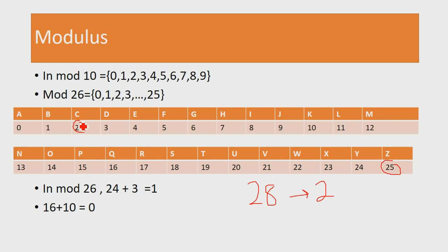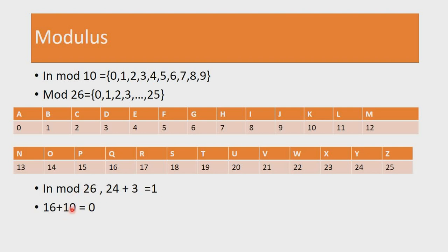It is not always the case that our encryption key is 3 — sometimes we may choose to change the encryption key. For example, if our encryption key is 10, to represent this using modulus, an element such as 16, which is Q, will be encrypted as 16 plus 10 equals 26. When you divide 26 by 26, the remainder is 0, which means when the key is 10, Q will be encrypted to 0. This is the overall concept of modulus and how we'll use it to implement the Julius Caesar cipher.